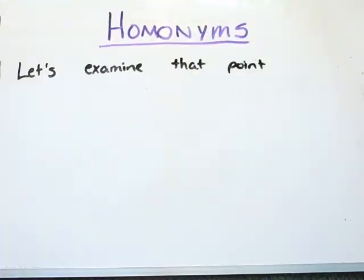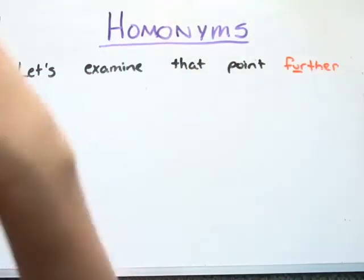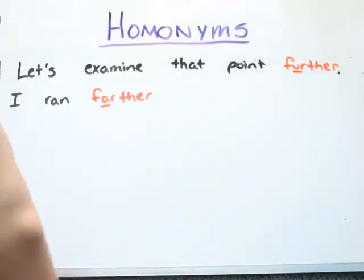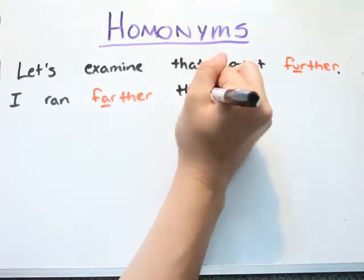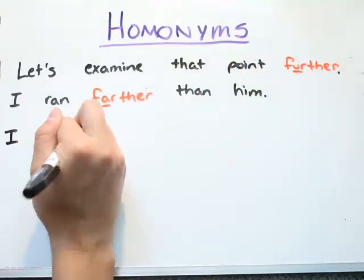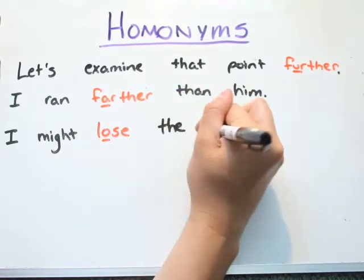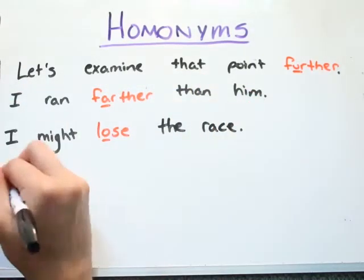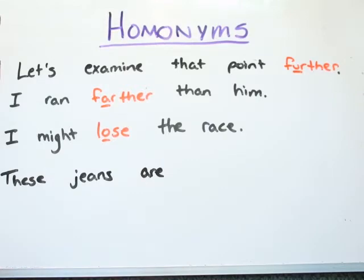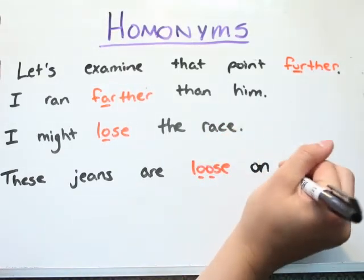'Further' with a U refers to the extent of something, whereas 'farther' with an A refers to physical distance. 'Lose' with one O is the opposite of win. 'Loose,' however, means baggy. A trick I like: think that the word 'loose' is baggy because it has two O's.